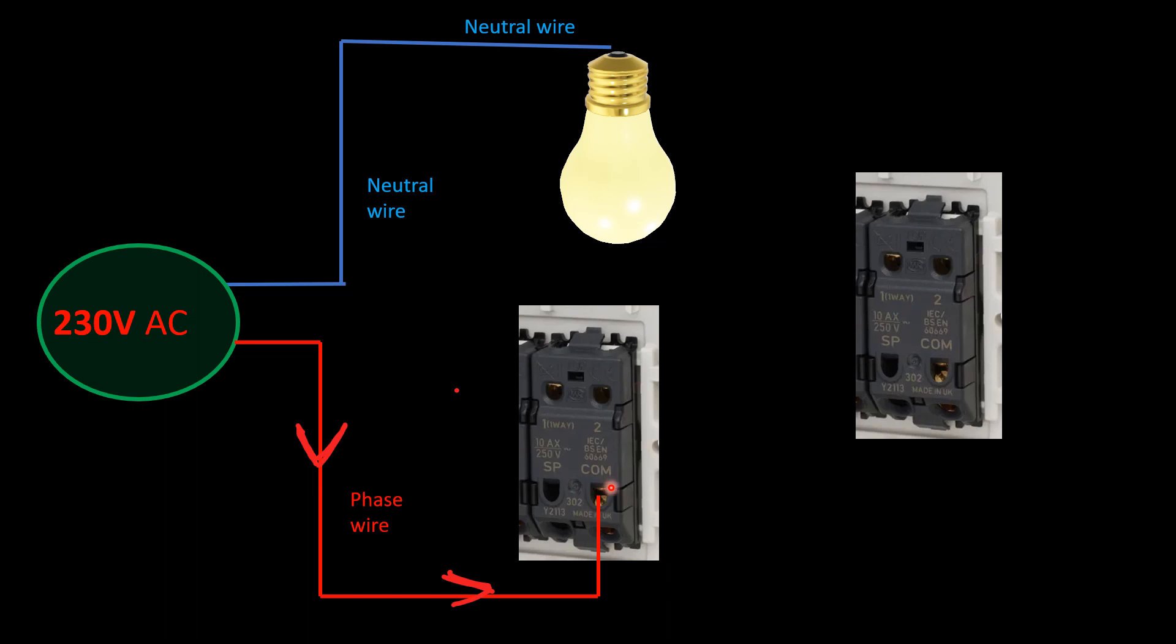Second, I start with the phase wire. You see here 'common'—this common terminal, I connect my phase wire like this. Next, this common—from this common, connect to the light. It's very easy, simple process. This common you connect to the light here.